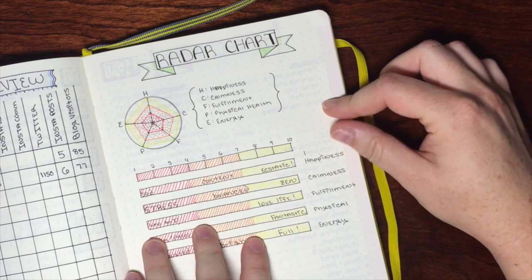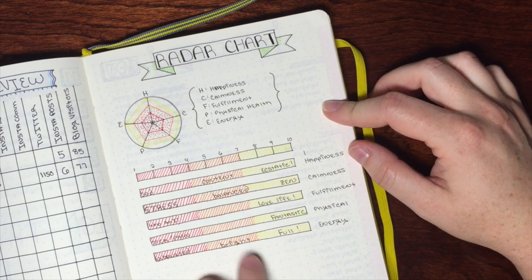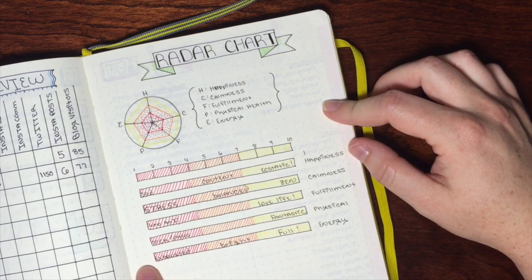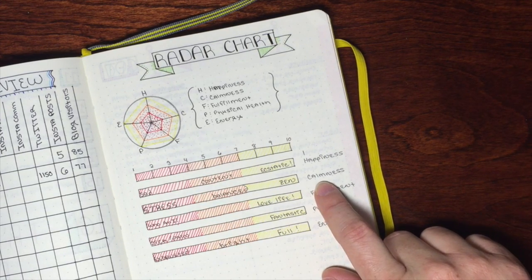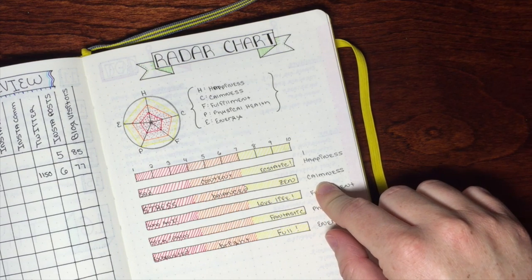I measure each of the things with happiness, calmness, fulfillment, physical health, and energy based on the scale. What I really wanted to do with the calmness is I wanted to measure my level of stress. How bad is my stress level today?